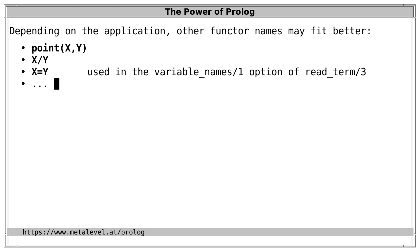Just to make this clear, it's perfectly fine to use any other functor. It's only that, in the sense of the ISO standard, the type pair means specifically and only terms with principal functor dash and arity 2.